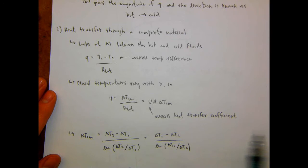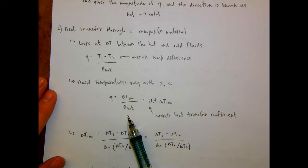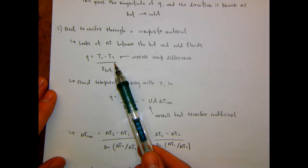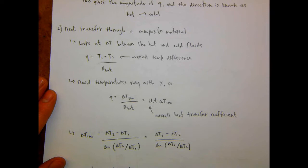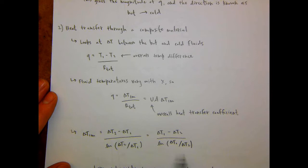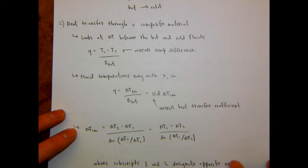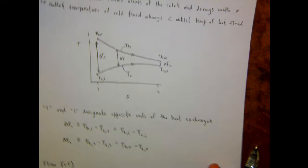You can also use the expression for the composite cylinder equation, where instead of a total T1 minus T2 on top, we have the log mean temperature difference, which is relevant because the temperatures of the fluids are changing in X, and then we have the total thermal resistance on the bottom. The expression for the log mean temperature difference is delta T2 minus delta T1 over log of delta T2 over delta T1.